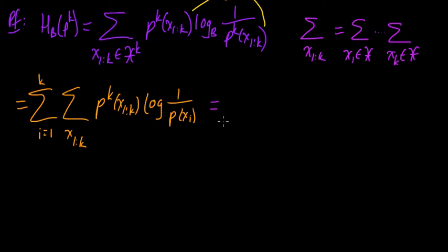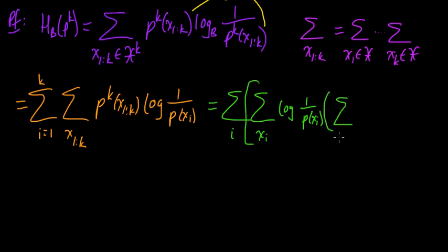Let me switch colors here. Let's pull out, so we have the sum over i log—we have to keep the sum over xi, log one over p of xi. And now we have inside the sum over all of the other x's. So we have the sum over all xj's where j is not equal to i of p to the k of x1 to k.